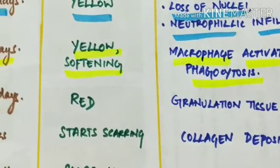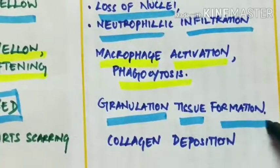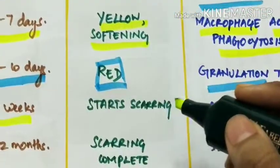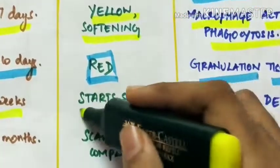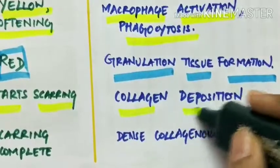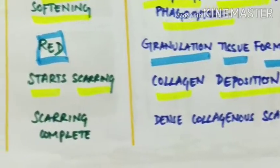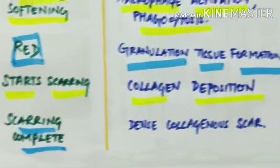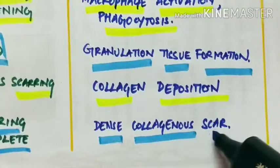In 7 to 10 days, the heart starts turning red and light microscopy shows granulation tissue formation. At 2 weeks, the heart starts scarring and collagen deposition is seen under light microscopy. After 2 months, scarring is completed and light microscopy reveals a dense collagenous scar.